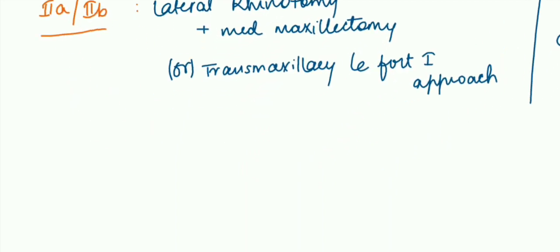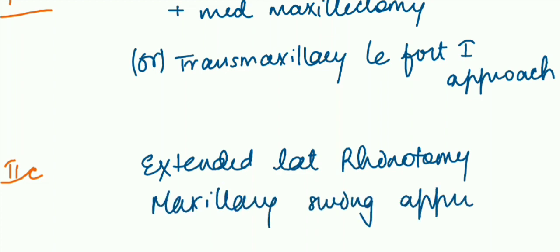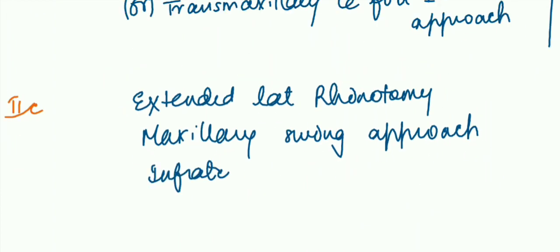In case the tumor enters into infratemporal fossa, that is 2c, we go through extended lateral rhinotomy or maxillary swing approach or infratemporal fossa approach.